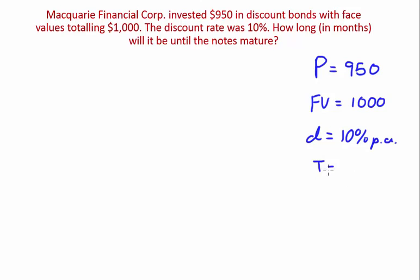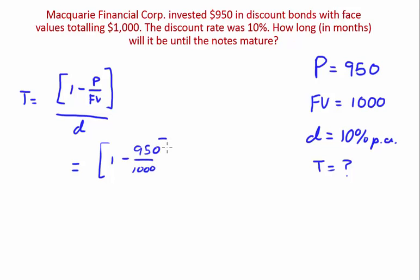What we're trying to find is time. So I'm going to write the formula for timing. But yet again, if you guys want to see how I got this formula, please refer to the previous video. But I know that time is one minus principal on your face value, close up the brackets, on your discount rate. So if we substitute these values in: one minus 950 on 1000, close bracket, on 10% would equal 0.5.